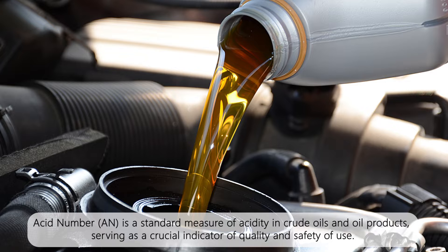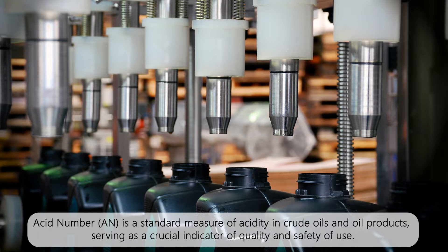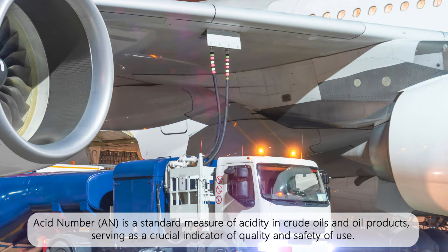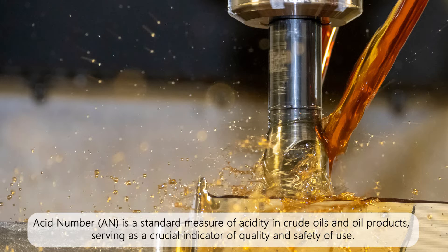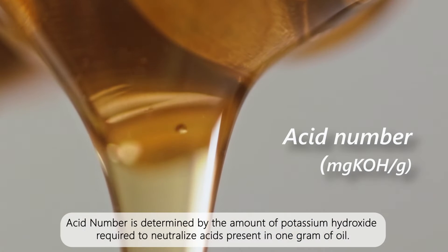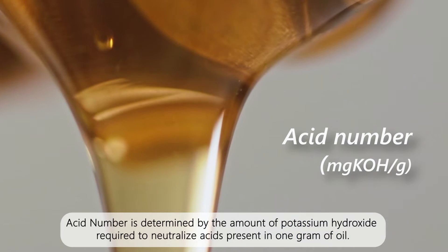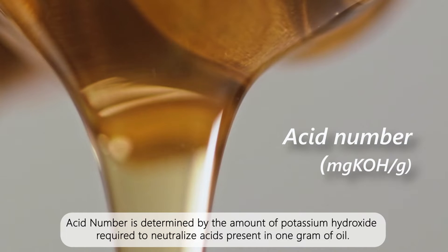Acid number is a standard measure of acidity in crude oils and oil products, serving as a crucial indicator of quality and safety of use. Acid number is determined by the amount of potassium hydroxide required to neutralize acids present in one gram of oil.